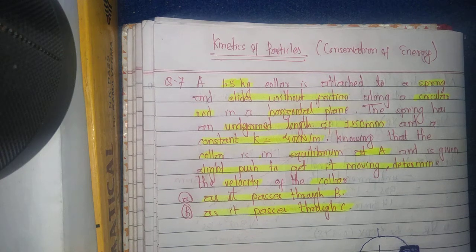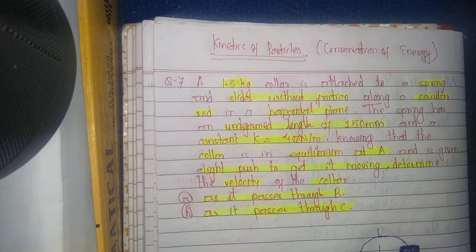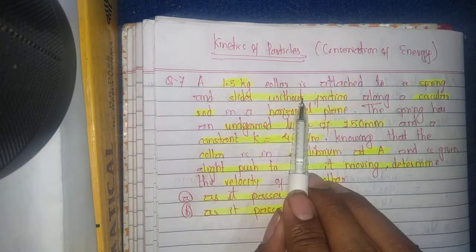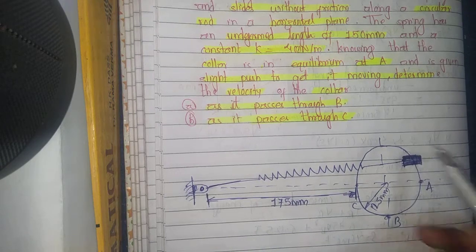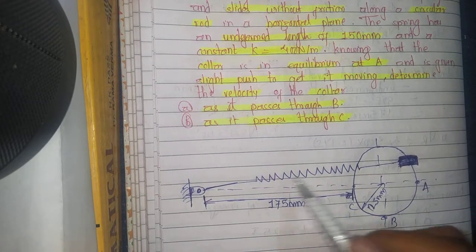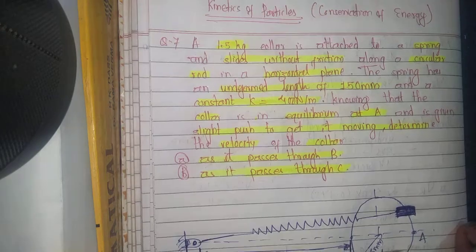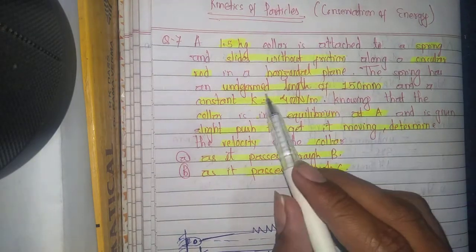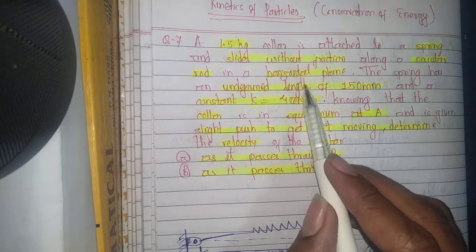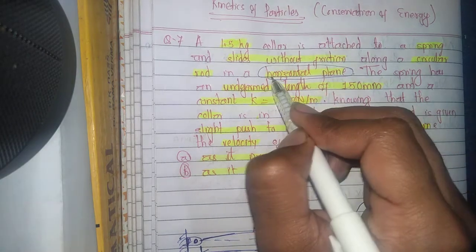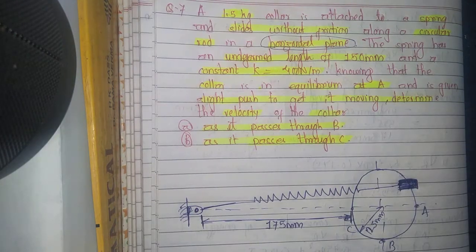Hello everyone, today we are going to solve a question related to kinetic energy, sub-particles, and conservation of energy. A 1.5 kg collar is attached to a spring and slides without friction along a circular rod in a horizontal plane. We must emphasize that this is a horizontal plane, not a vertical plane.